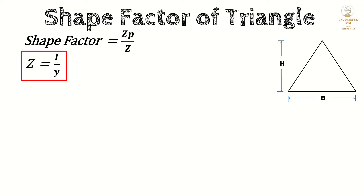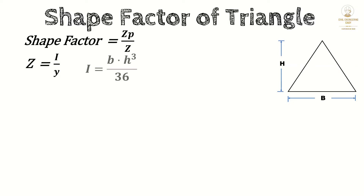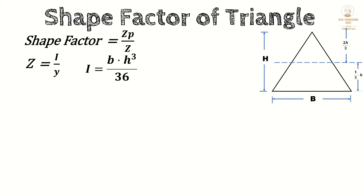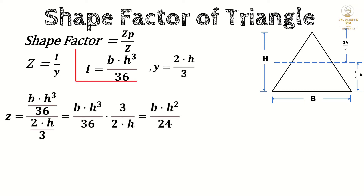The distance y is the depth of the neutral axis. The moment of inertia for the triangular section is bh³ divided by 36. The neutral axis is located at a distance of 2h/3 from the top and h/3 from the base. We take the maximum value for y, so y for the triangle will be 2h/3. Substituting I and y into the elastic modulus formula and simplifying, we get bh²/24.